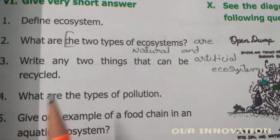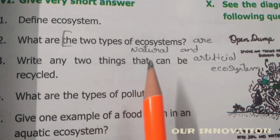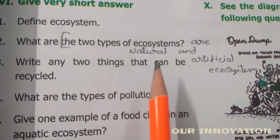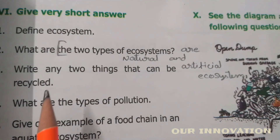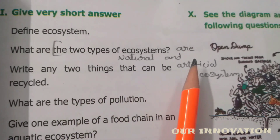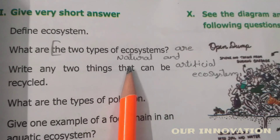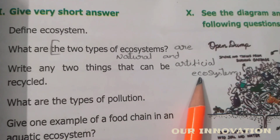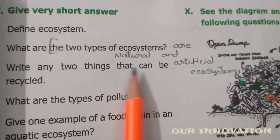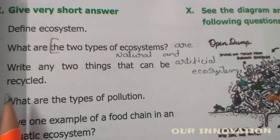What are the two types of ecosystem? The two types of ecosystem are natural ecosystem and artificial ecosystem.